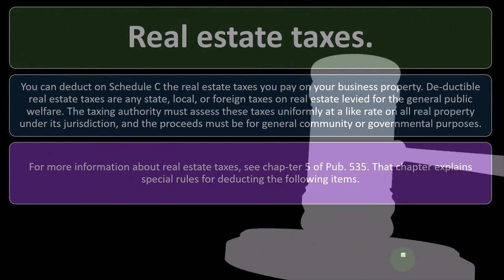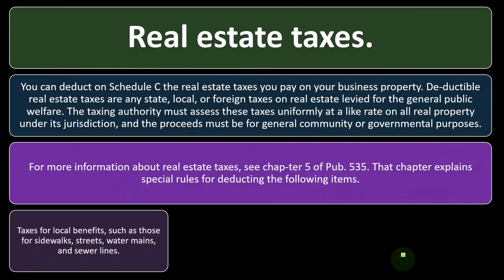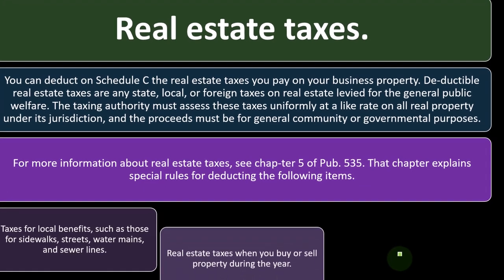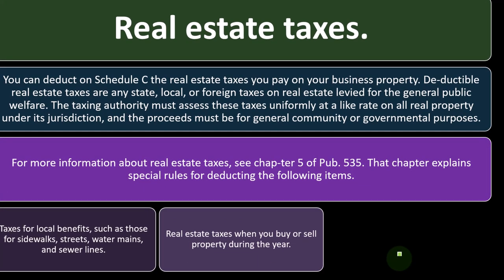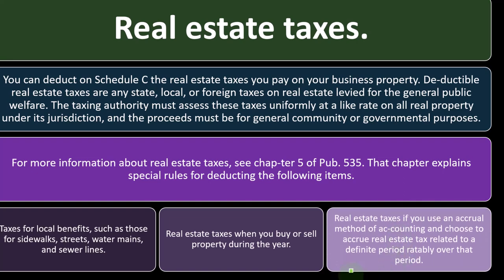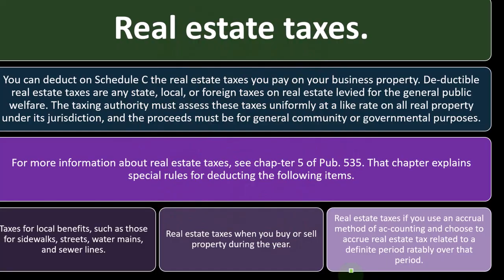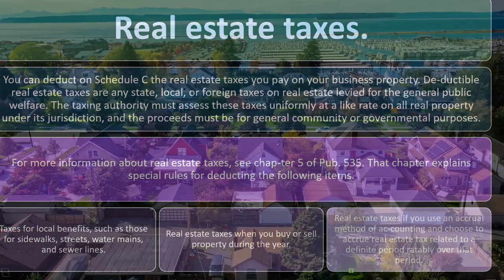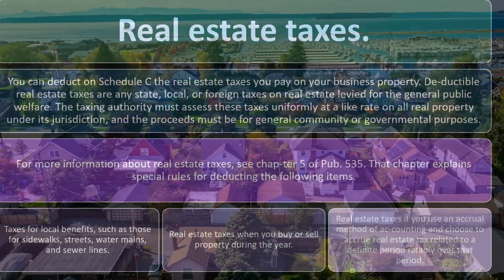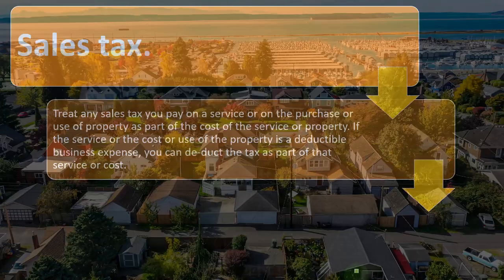Chapter 5 of Publication 535 explains special rules for deducting the following: taxes for local benefits such as those for sidewalks, streets, water mains, and sewer lines; real estate taxes when you buy or sell property during the year; and real estate taxes if you use an accrual method of accounting and choose to accrue real estate tax related to a definite period, ratably over that period.